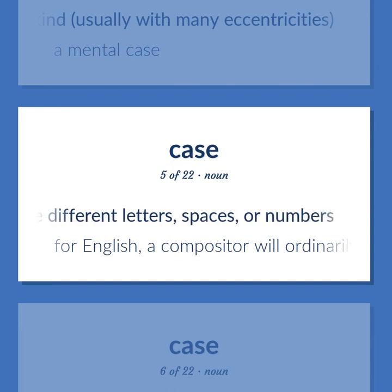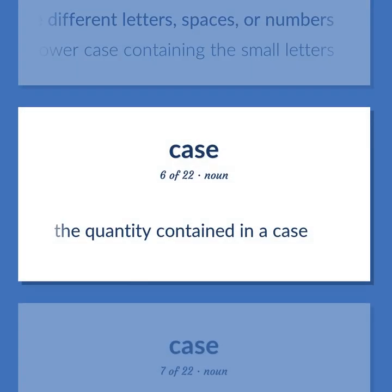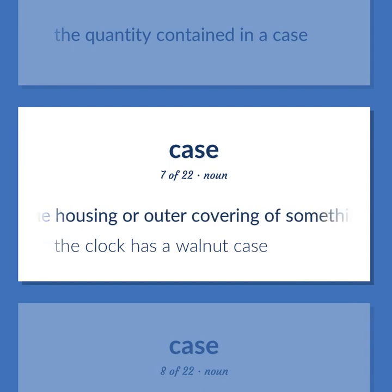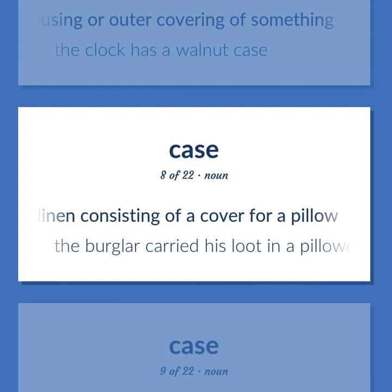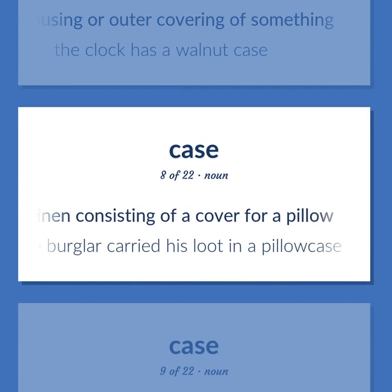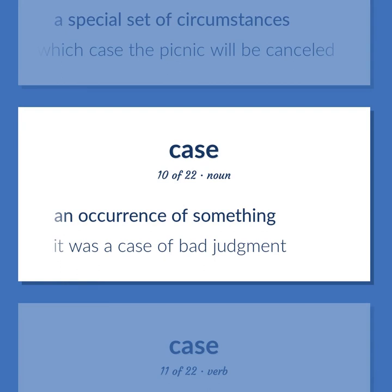For English, a compositor will ordinarily have two such cases: the uppercase containing the capitals and the lowercase containing the small letters. The quantity contained in a case. The housing or outer covering of something. The clock has a walnut case. Bed linen consisting of a cover for a pillow. The burglar carried his lute in a pillowcase. A special set of circumstances. It may rain, in which case the picnic will be cancelled. An occurrence of something. It was a case of bad judgment.